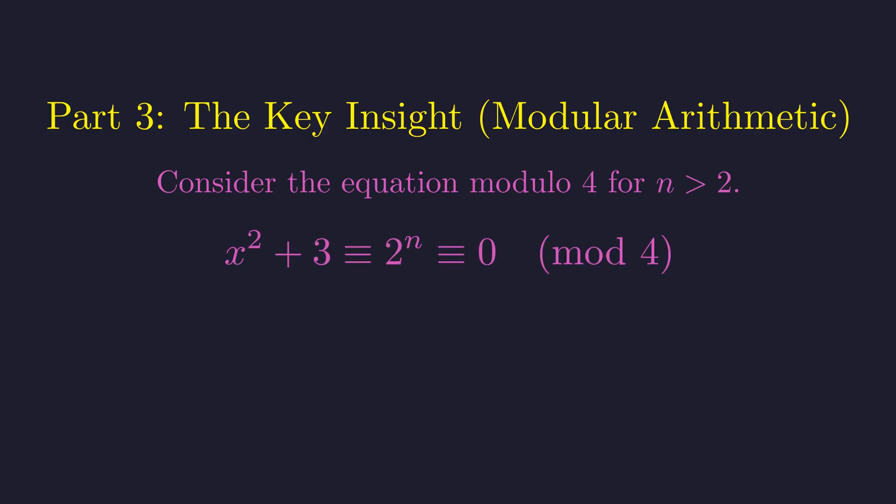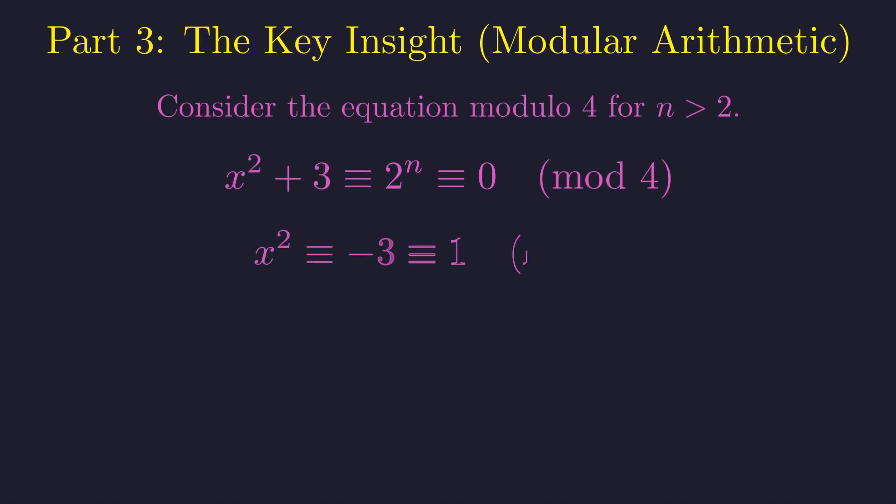This means our equation becomes x squared plus 3 is congruent to 0 modulo 4. Subtracting 3 from both sides, we get that x squared must be congruent to 1 modulo 4.